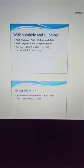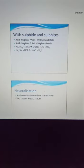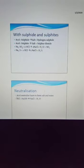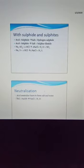Acid with sulfites forms a salt and sulfur dioxide gas. For example: Na₂SO₃ + 2HCl forms 2NaCl + H₂O + SO₂. When acid reacts with a base or alkali, they react with each other to form salt and water. This process is called neutralization.